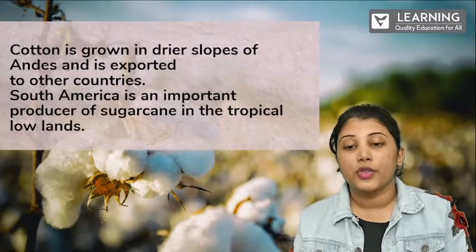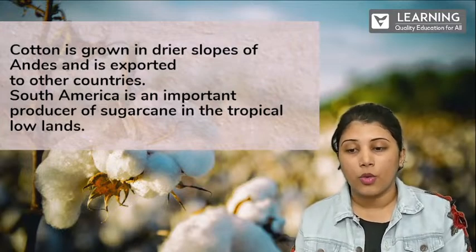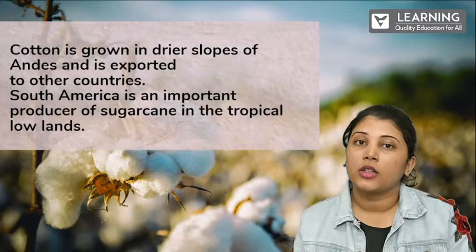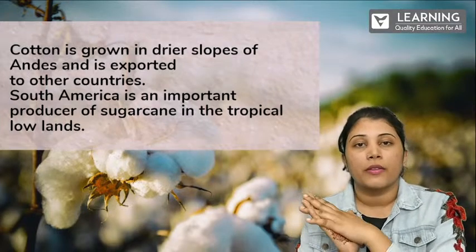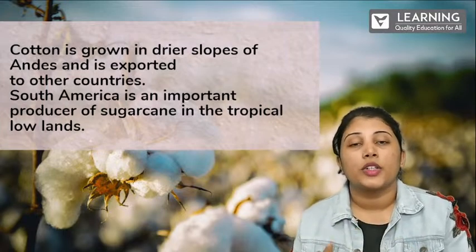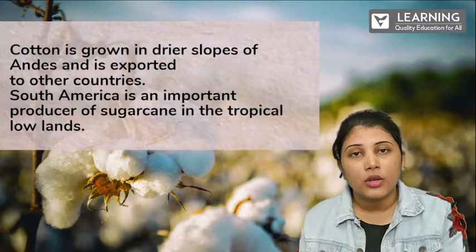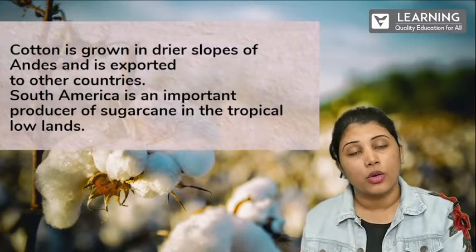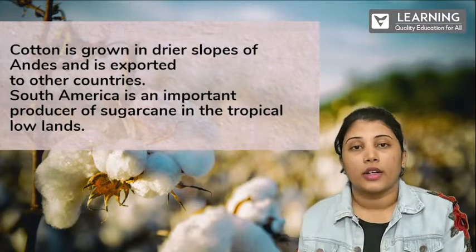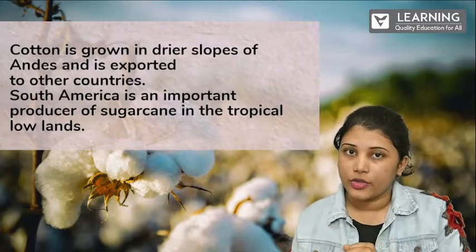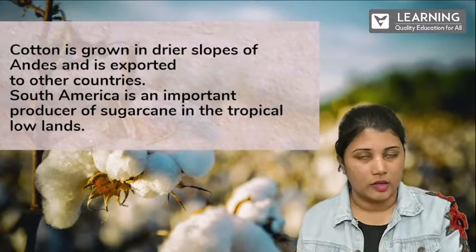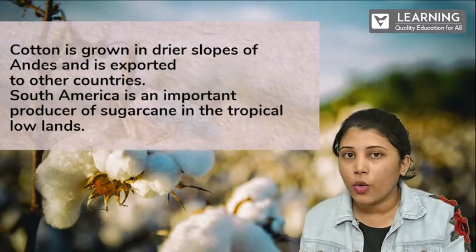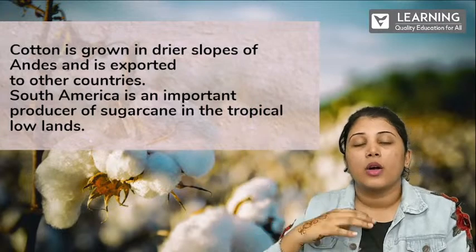Cotton is grown on the drier slopes of the Andes and is exported to other countries. Cotton needs lots of water for growing, and the slopes receive rainfall which provides water for cotton. South America is an important producer of sugarcane in the tropical lowlands.